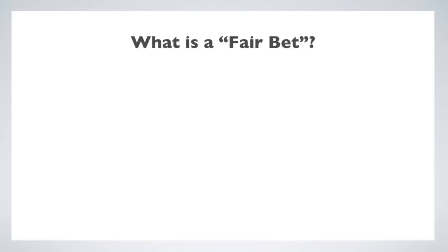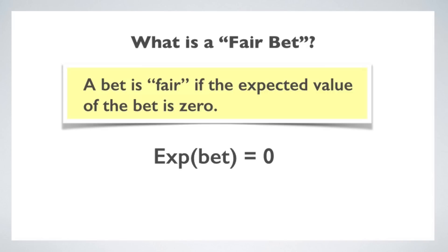What I want to do now is use this concept of expected value to talk about casino games and how payoffs are structured to ensure that the house always makes money in the long run. First, we need to revisit the concept of a fair bet or a fair gamble. With this concept of expected value, we can state it clearly: a fair bet is one where the expected value of the bet is zero. In casino gambling, you pay money for the opportunity to gamble, so if you lose, you've lost that money. Over the long run, a fair bet means you'll win as much as you lose — it comes out a wash.